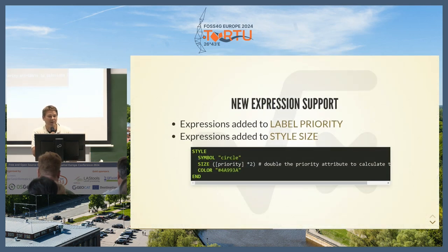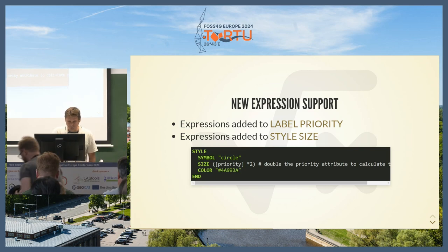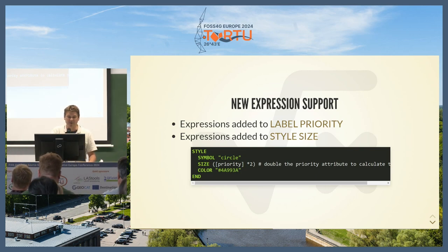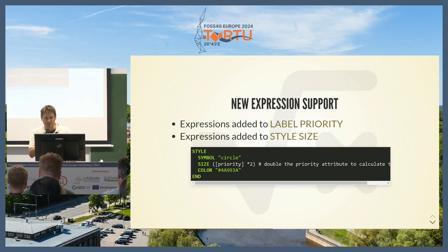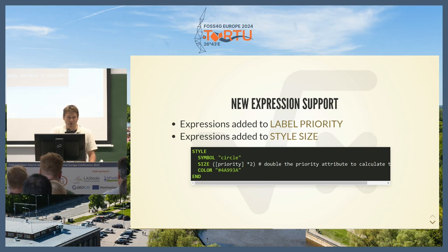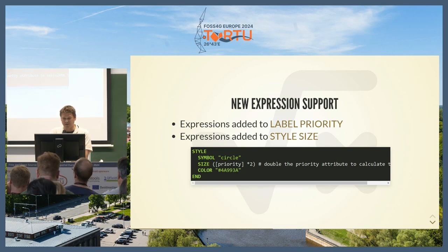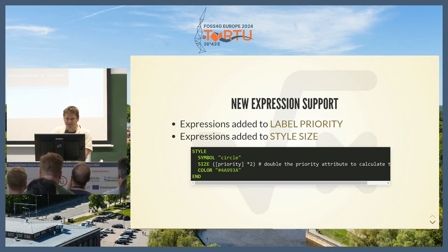There are a couple of new expression support features in the map file. You can now build up values based on attributes and expressions rather than hard-coded values. So for label priorities there's a bit more flexibility with attributes, and the same applies for style size.